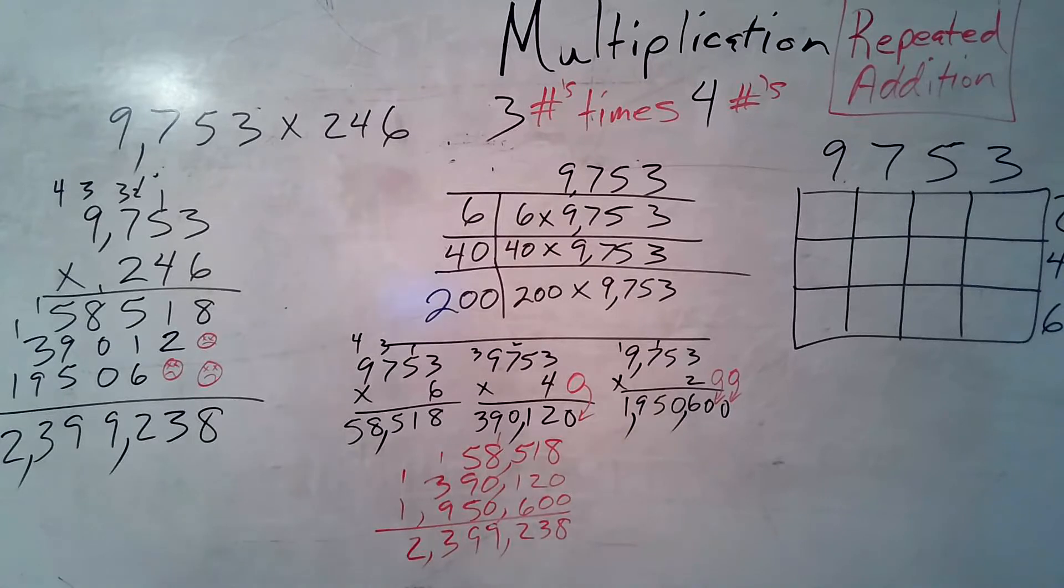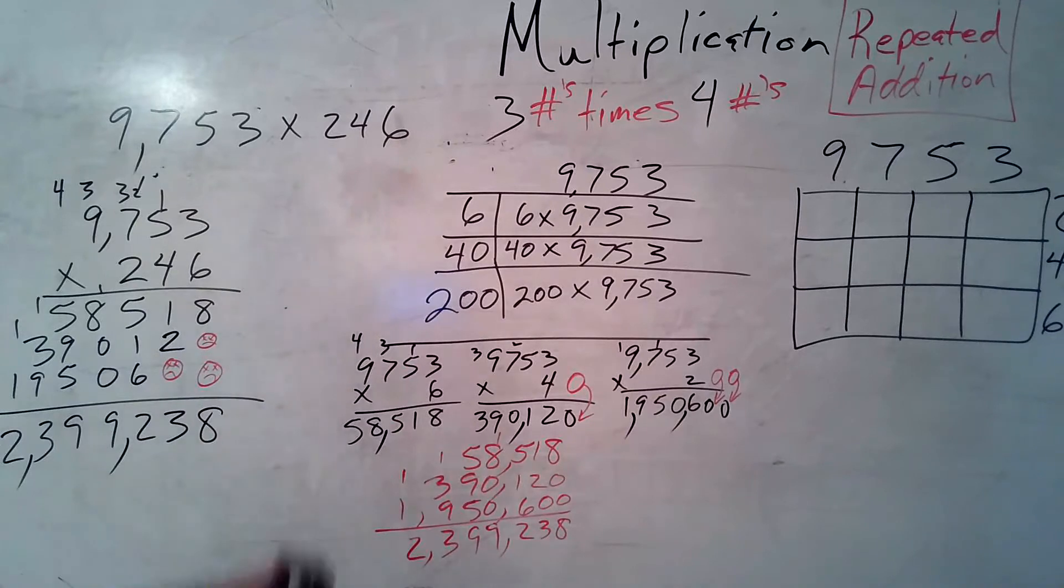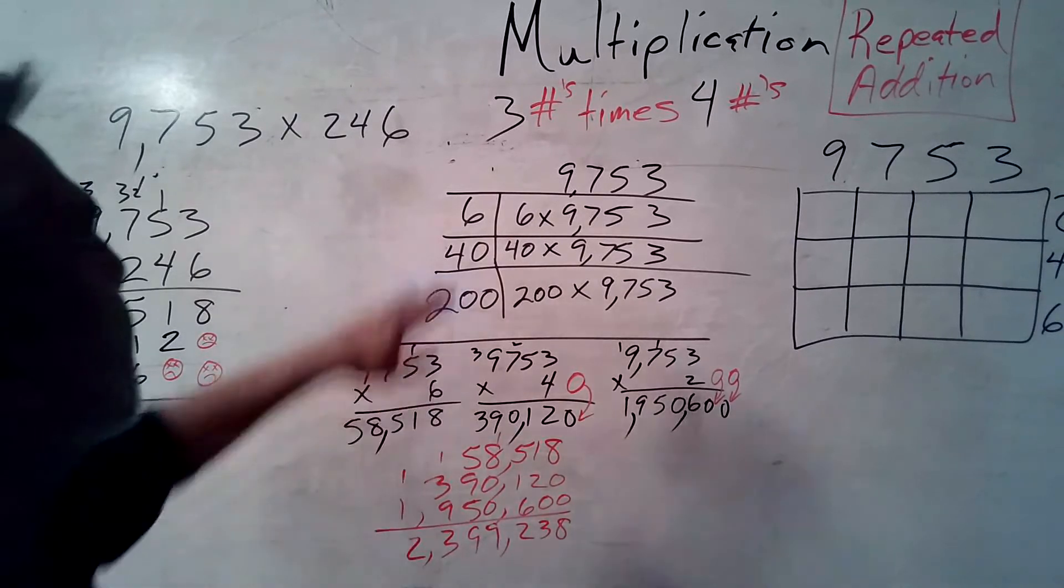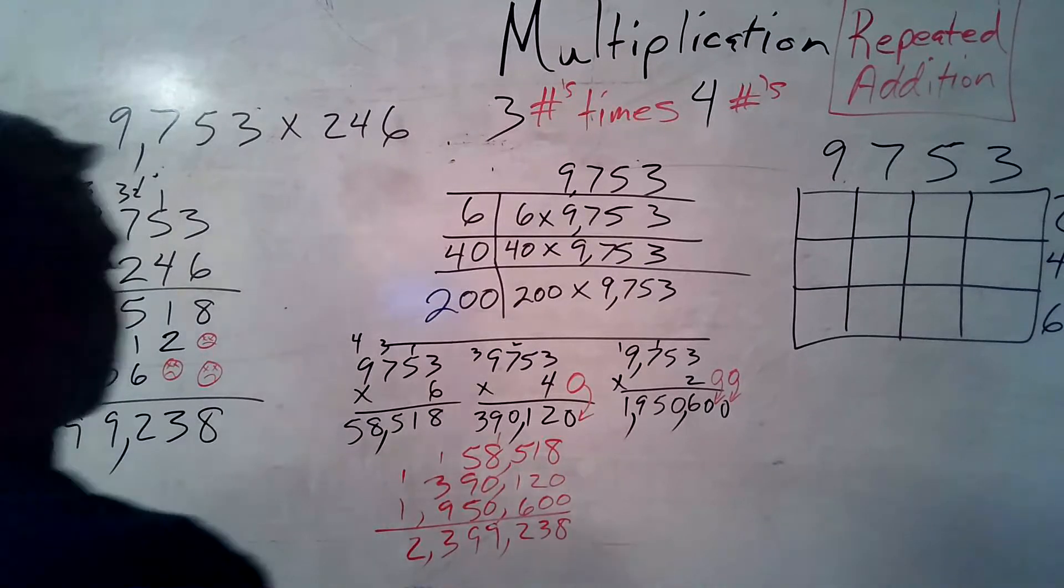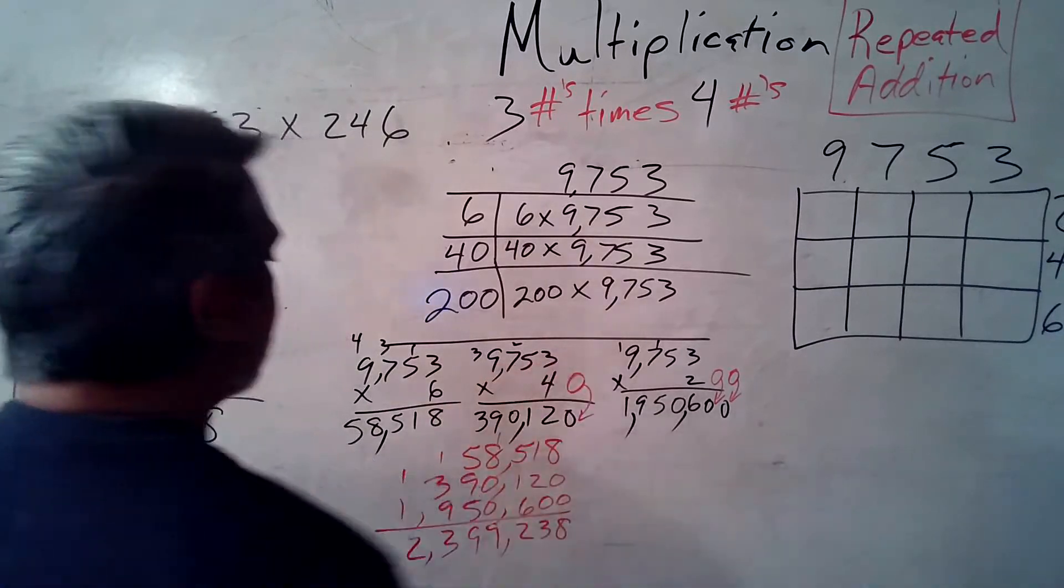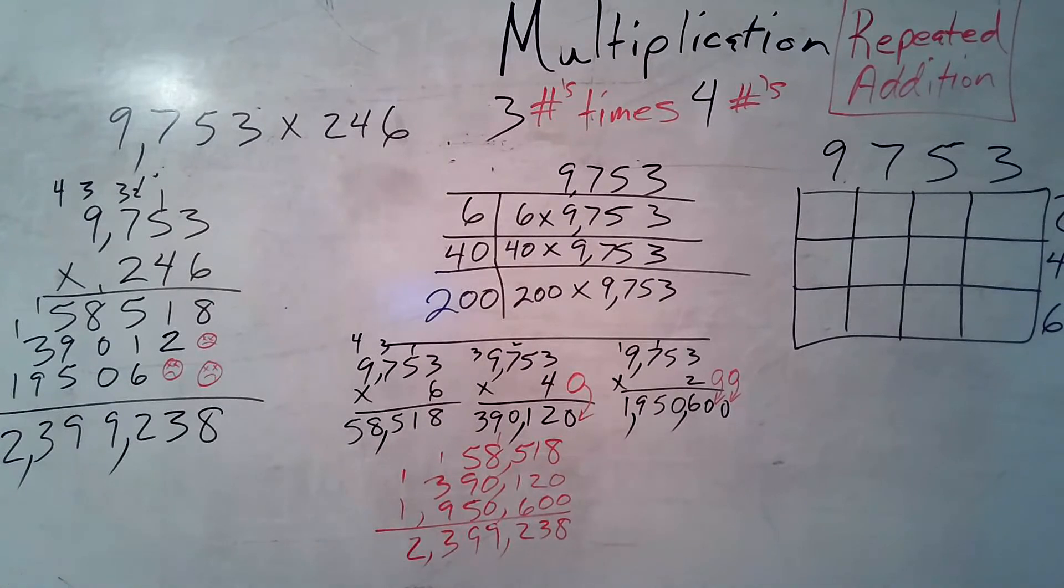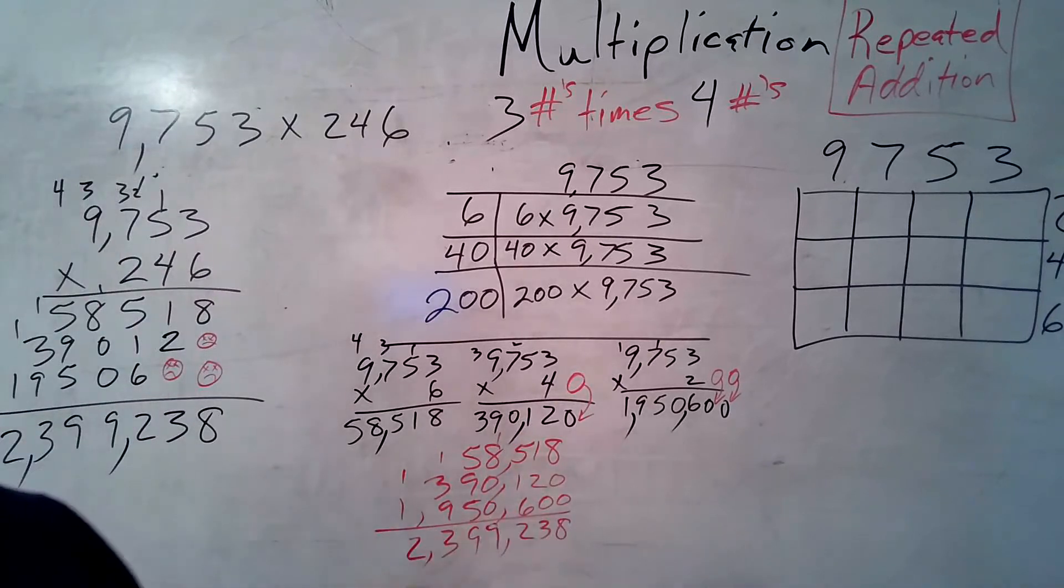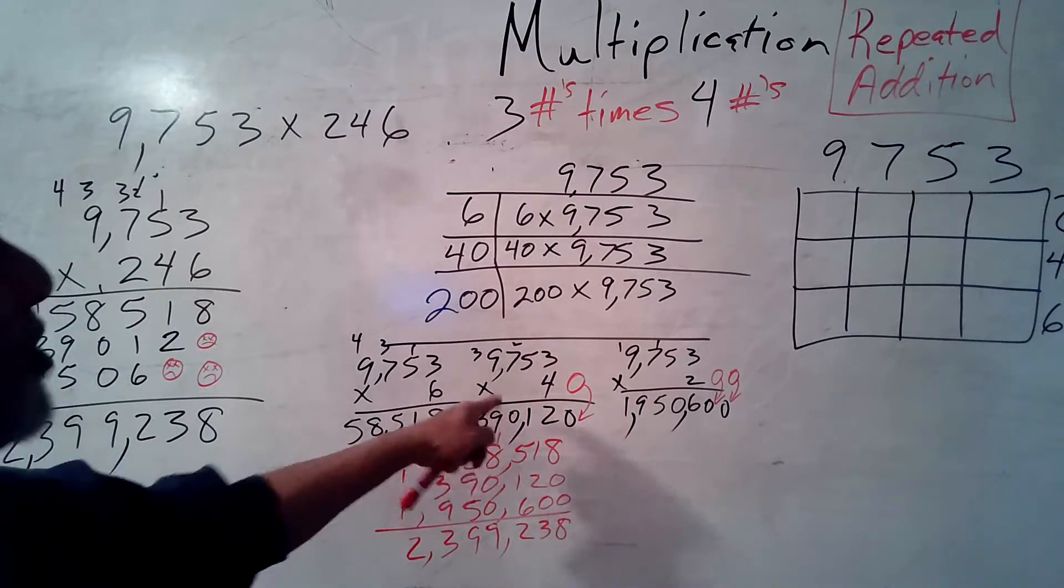Uh-oh. Partial products. All right. I left the 9,753 alone. I took my 246 and I broke it. Watch out! So, I broke the 6 by itself in the 1's place. I broke the 40 in the 10's. And I broke 200 in the 100's. So, 6 times 9,753 gives me 58,518. 9,753 times 4. But wait. That's not a normal 4. It's a 40 because I got that red 0 there. So, when I multiply by 4, I get 3, 9, 0, 1, 2. But I had to remember to add that 0. When I do that, then I get 390,120.